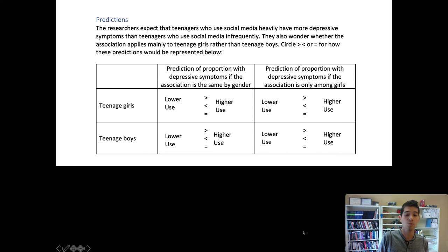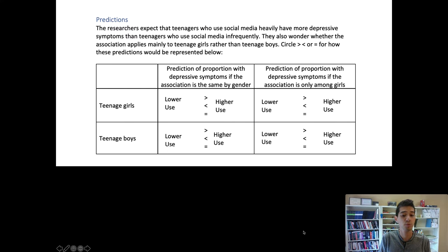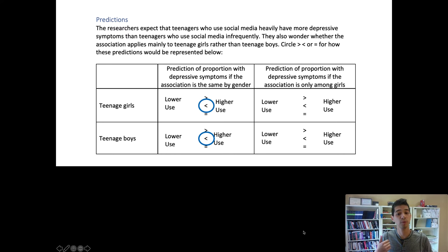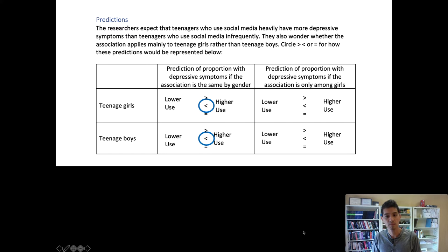Among teenage girls, if we think social media drives depressive symptoms, we would expect a higher percent of teenage girls to be depressed when they use social media a lot versus when they don't. In this additive association scenario, we expect the same pattern for boys — for both teenage boys and girls, we think depression will be more common for high social media users than low social media users.